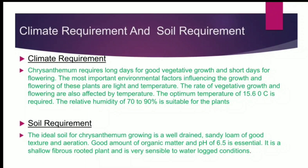Climate and Soil Requirements. Chrysanthemum requires long days for good vegetative growth and short days for flowering. The most important environmental factors influencing growth and flowering are light and temperature. The optimum temperature of 50.6 degrees Fahrenheit is required, and a relative humidity of 70 to 90% is suitable. The ideal soil is a well-drained sandy loam of good texture and aeration, with good organic matter and a pH of 6.5. It is very sensitive to waterlogged conditions.